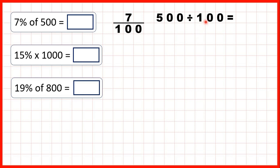500 divided by 100 is 5, because we can cancel the two end zeros, and then 5 divided by 1 is 5. So now we need to take that answer and multiply it by the numerator, so we need to work out 5 times 7. 5 times 7 is 35, so 7% of 500 is 35.